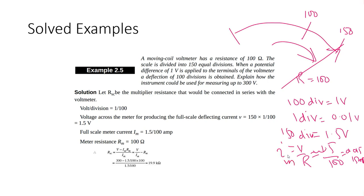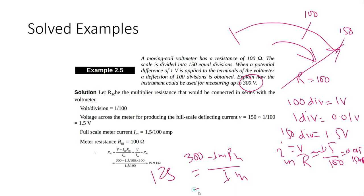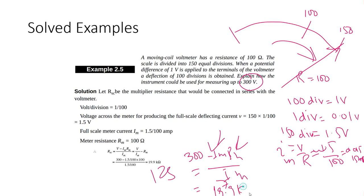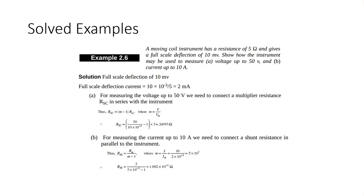15 milliampere is Im, the maximum current the galvanometer can bear. Using the formula Rsc = (V minus Im·Rm) divided by Im, with V = 300, we get Rsc equal to 19.9 kilo-ohm.